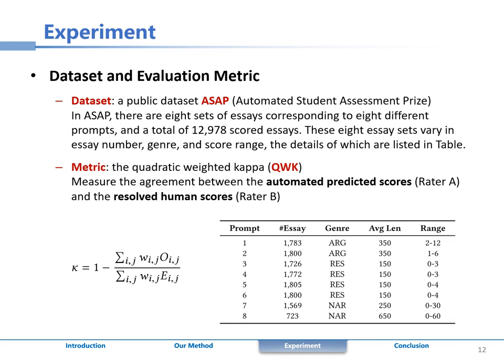The QWK can be used to measure the agreement between the automated predicted score and the resolved human scores.